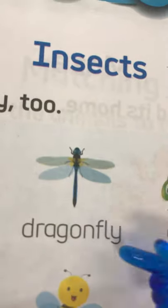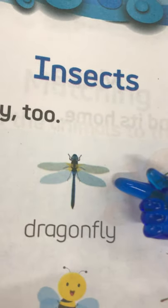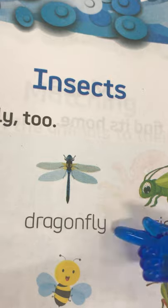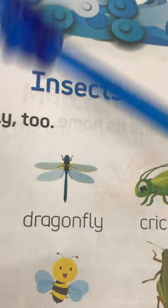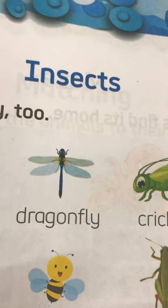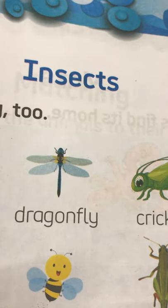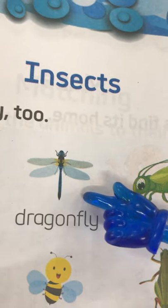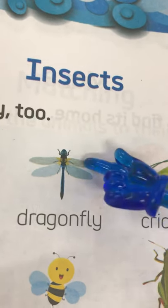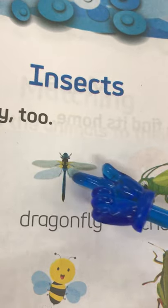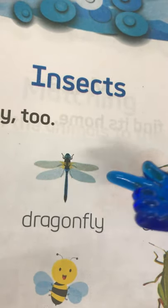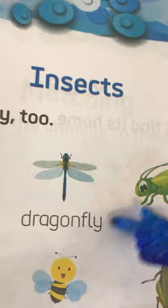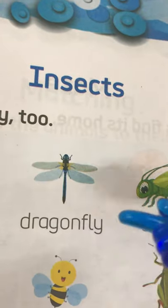Next is dragonfly — D-R-A-G-O-N-F-L-Y. Do you know the wings of the dragonfly have a net-like pattern? So the wings of the dragonfly have a net-like pattern. This is dragonfly.